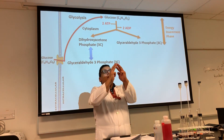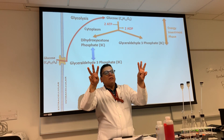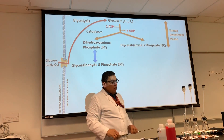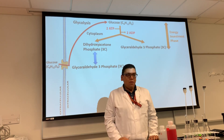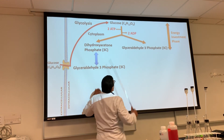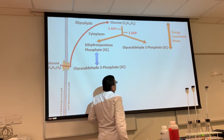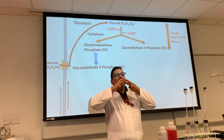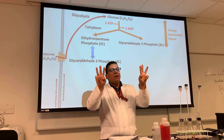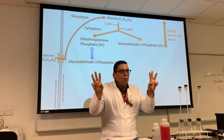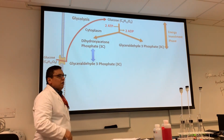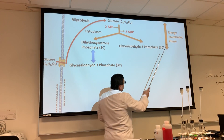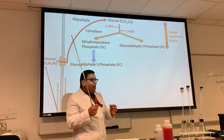In the energy investment phase, a six-carbon glucose breaks down into two G3P — glyceraldehyde-3-phosphate. Did we lose any carbons? No, because we start with six and we still have six. The three carbons are still there — break — two G3Ps, no carbons lost. This is called the energy investment phase, meaning you must use some energy to get this process started.